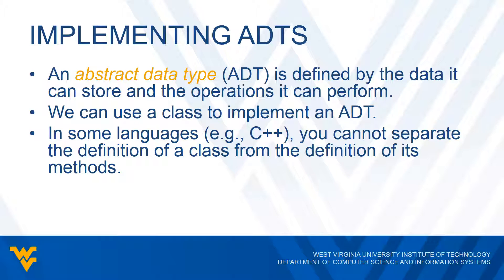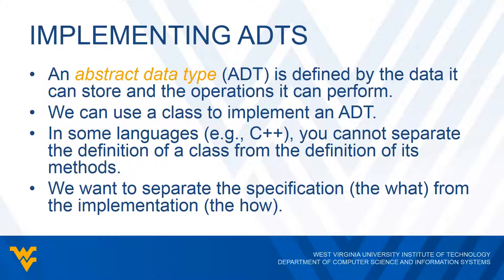We want to be able to separate the specification from the implementation. Think of the specification as what we want to do, and the implementation as how we would go about doing that. So what we want to do with our classes is separate what we want to do from how we want to do it — separate the what from the how.